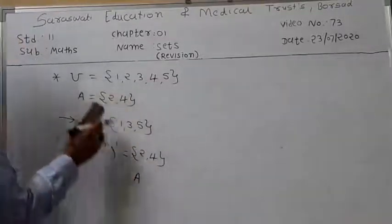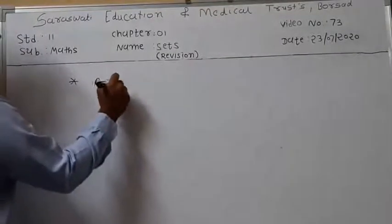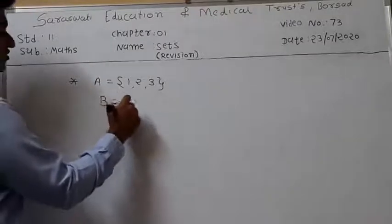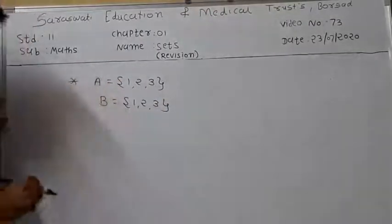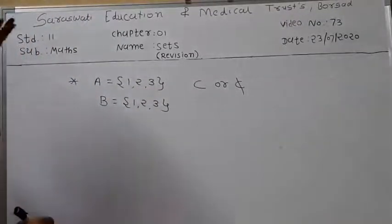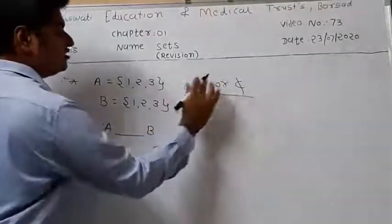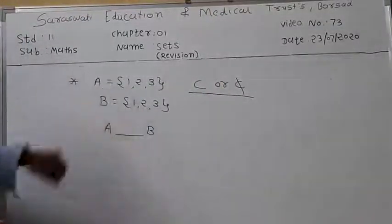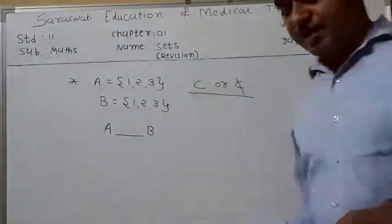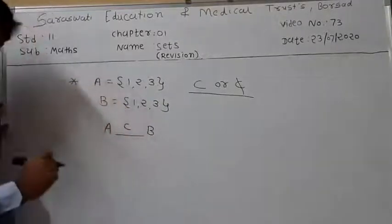Now, how can we find subsets? Suppose set A equals {1, 2, 3} and set B also has 3 elements — the same elements. Our question is: is A a subset of B or not? By definition, all elements of set A must be present in set B. So here we can say that A is a subset of B.